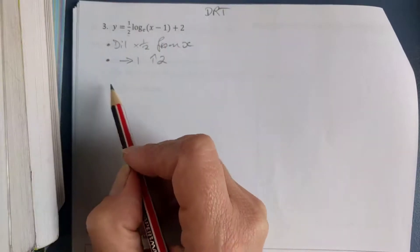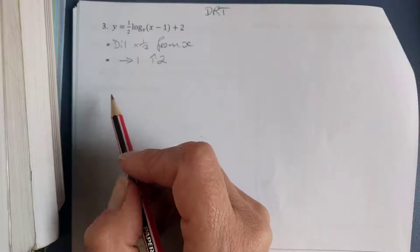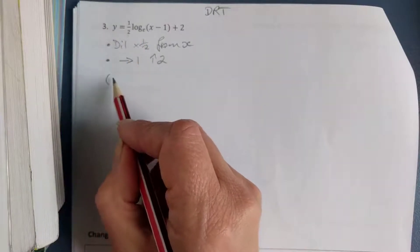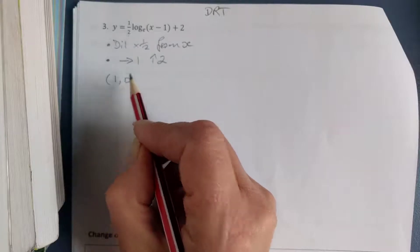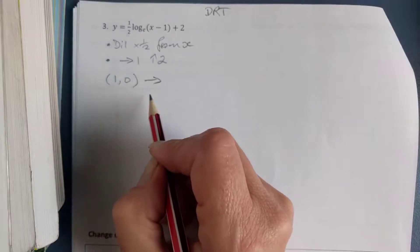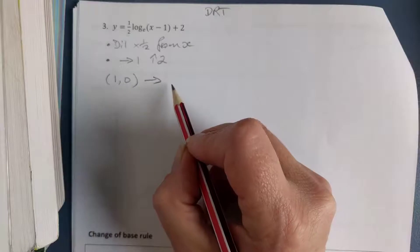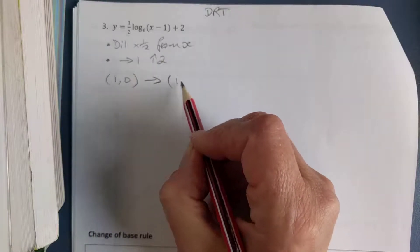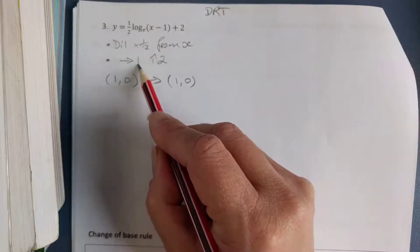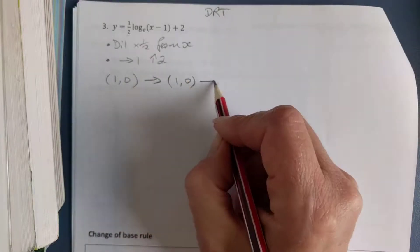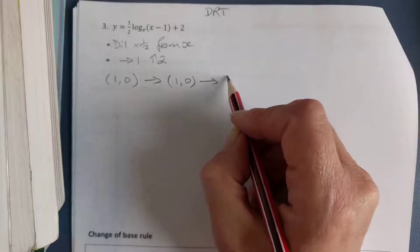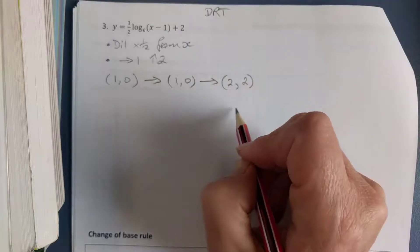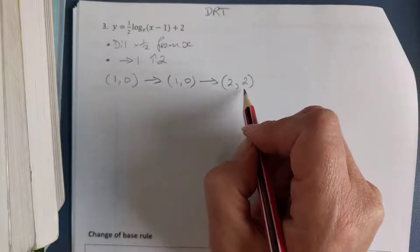So now all I'm going to do is I'm going to take my key points. My base is e, so my first key point is my x-axis intercept, which is 1, 0. So if I dilate that by a half from x, that's going to act on y. That's not going to change it, it's going to stay as 1, 0. If I then go to the right one and up 2, that means I'm going to add 1 to x and I'm going to add 2 to y. So I'm going to go from 1, 0 to 2, 2.